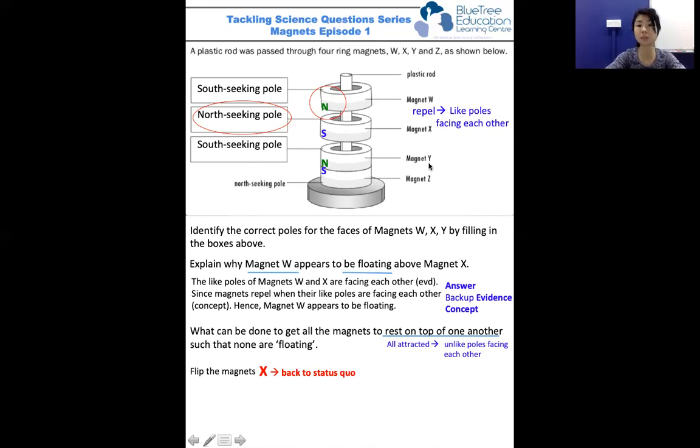If you flip W, X, and Y all at the same time, you literally will just go back to status quo, meaning W will still repel X, X will still repel Y. There won't be any difference.